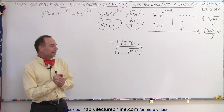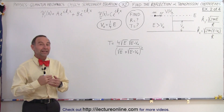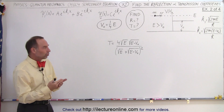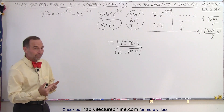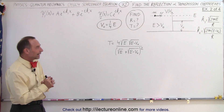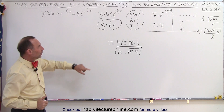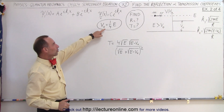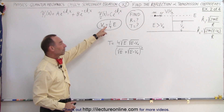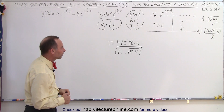Welcome to our lecture online. Here we're going to try to calculate directly the transmission coefficient. From the previous video, we know that it's somewhere about 99.5%. We're going to use the value that the potential of the potential step is one quarter the energy of the particle.